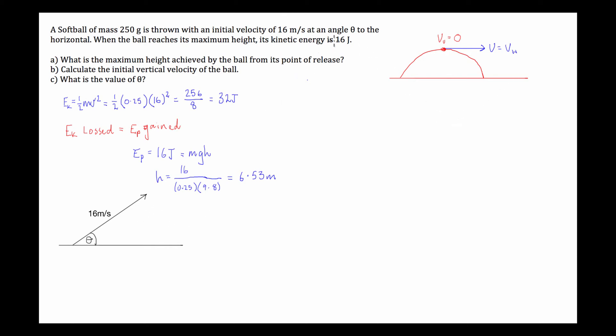Now, we know that at the point of release, its horizontal component of its velocity is going to be equal to the horizontal component of velocity at the maximum point, because horizontal velocity, assuming no wind resistance, does not change from when the ball is released to when it hits the ground again.